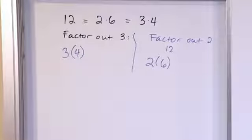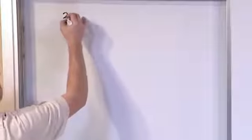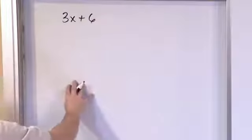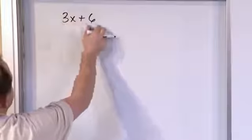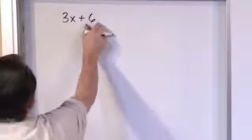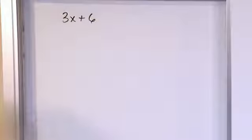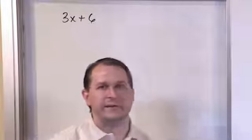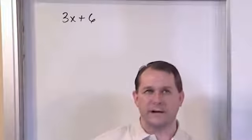Let me erase the board and show you how to factor a simple algebra expression. What if my expression is 3x plus 6, and I'm asking you to factor it? When I say factor, I'm trying to find the greatest common factor between both of these terms — basically looking at what's common and pulling that out. It's a way to reverse-simplify the expression; you're creating a new form that's equivalent to the original.